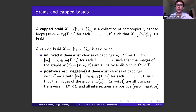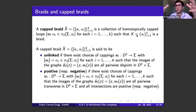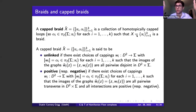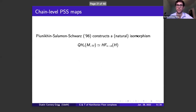A capped braid is positive if you can choose cappings such that the graphs aren't disjoint but intersect transversely and positively, and negative if the intersections are negative.